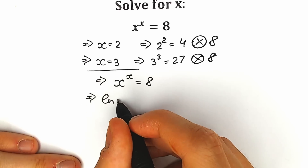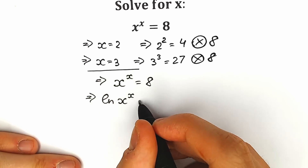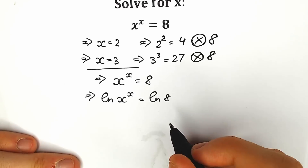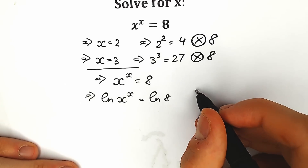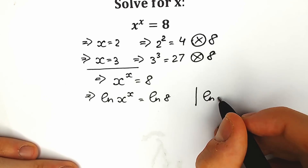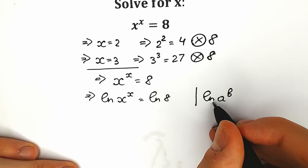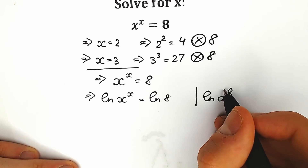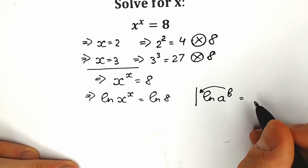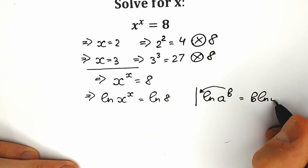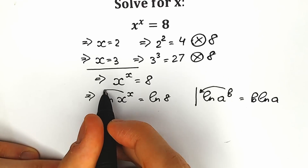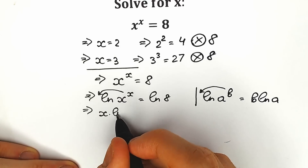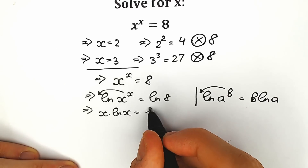As a result, we have natural log of x to the power x equal to natural log of 8. We need to know a really great property: natural log of a to the power b equals b times natural log of a. So this x will come down, and we have x times natural log x equal to natural log 8.